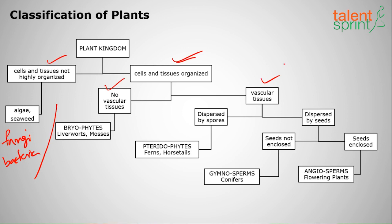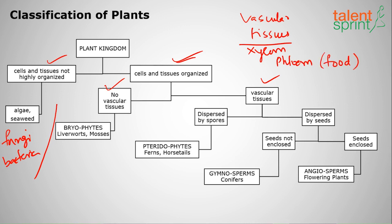For the highly organized group, the further classification depends on the presence of vascular tissues — namely xylem and phloem. Phloem carries food and xylem carries water and minerals. If vascular tissues are absent, the best example is bryophytes, which include liverworts and mosses.